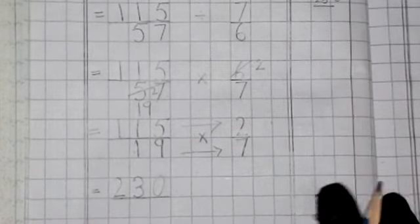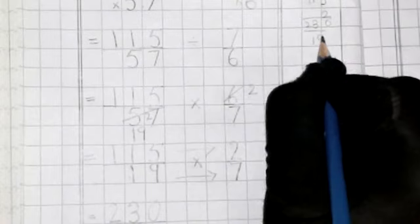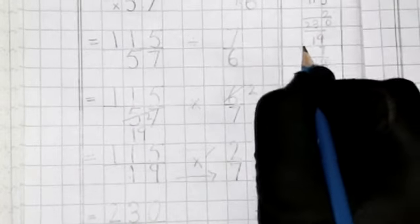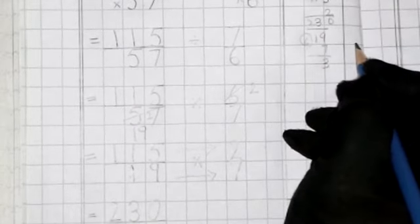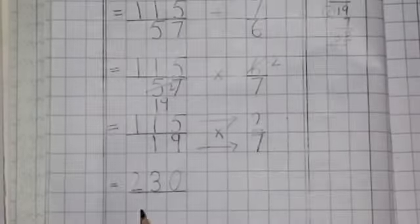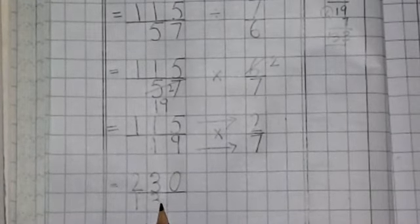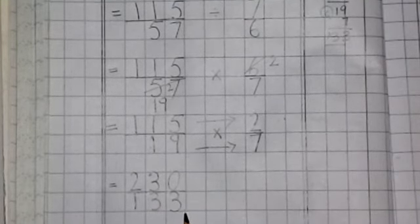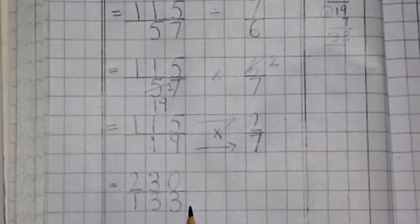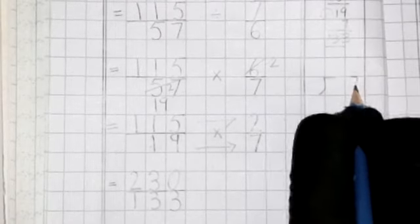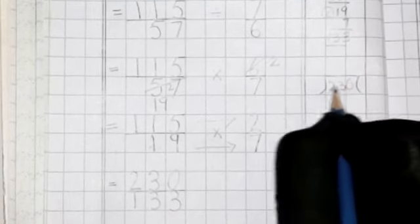For denominator, 19 times 7. 7 times 9 is 63. Write 3 and 6 is carried. 7 ones are 7. Add 6. 13. This is 133.